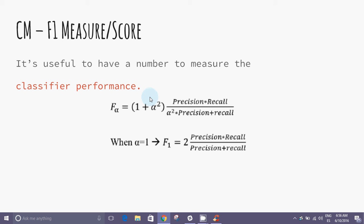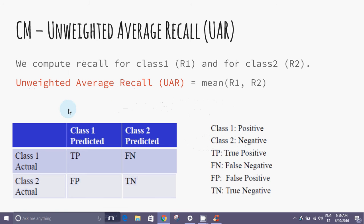The F-alpha score measures the effectiveness of retrieval with respect to a user who attaches alpha times as much importance to recall as precision. UAR, or unweighted average recall, is defined as the average of the rate of recall of each class.